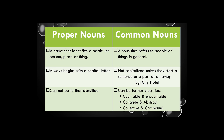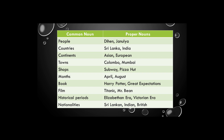A proper noun is a name that identifies a particular person, place, or thing. A common noun is a noun that refers to people or things in general. Proper nouns always begin with a capital letter, but common nouns are not capitalized unless they start a sentence or are part of a name — for example, city or hotel. Proper nouns cannot be further classified, but common nouns can be further classified as countable and uncountable, concrete and abstract, collective and compound.